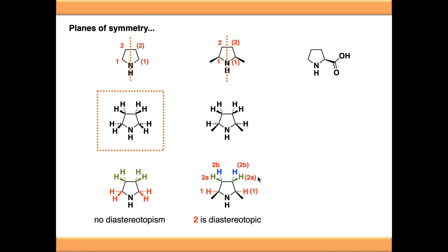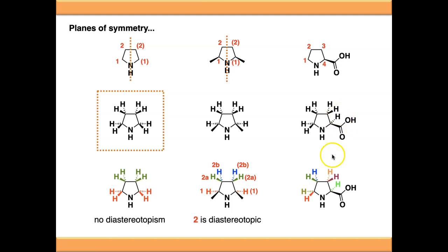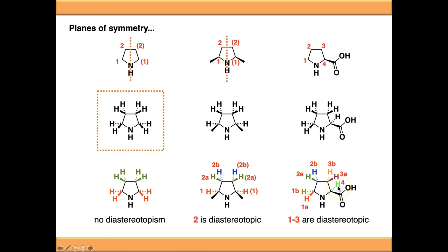Moving on to proline: the symmetry down the centre of the ring is broken, so all chemical environments around the ring are different — numbered 1, 2, 3, and 4. In 3D, because there is a stereocenter here with the carboxylate coming out of the screen and the hydrogen going into the screen, there is no plane of symmetry in the screen either. All protons around the ring in proline are in different chemical environments. Positions 1, 2, and 3 are all diastereotopic, and you would expect to see 7 different proton signals in the NMR spectrum for proline.